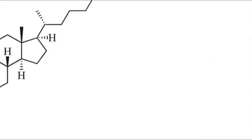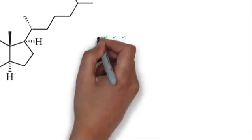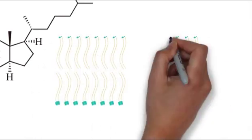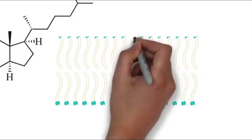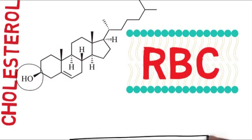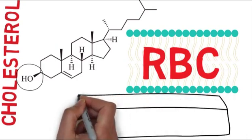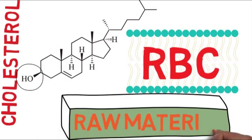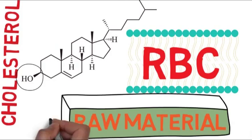Cholesterol is a plasma membrane component in all animal cells, such as in red blood cells. A second function is to serve as raw material for the synthesis of other steroids such as sex and adrenal cortical hormones and bile acids.